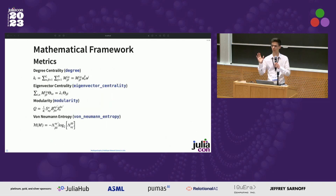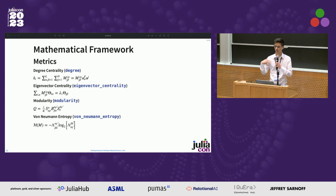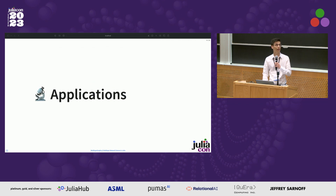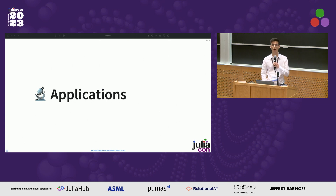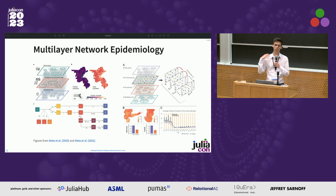MultilayerGraphs.jl fully extends Graphs.jl, and therefore inherits all monolayer methods, metrics, and descriptors, like multilayer degree centrality and von Neumann entropy, and so forth. Multilayer graphs have been adopted to model the structure and dynamics of a very wide variety of complex systems. I decided to focus briefly on multilayer network epidemiology, because of the COVID-19 pandemic and its policy relevance.